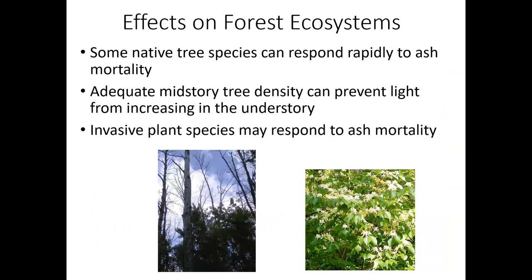We've also done work understanding the effects of ash mortality on forest ecosystems. We found that some native tree species can respond rapidly to ash mortality. From light measurements in the understory, if you have enough density of midstory trees — like elms and maples — they can actually prevent light from increasing in the understory by rapidly filling in those gaps. That's important because if you have invasive plant species lurking in low densities in your understory, a burst of light could facilitate those species. Brian Hoven has shown that invasive plant species are in some sites responding to ash mortality when we do have increases in light level.